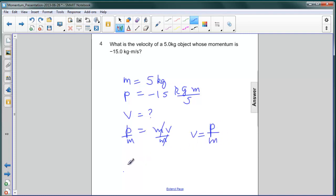And we can make substitutions for p and m and we get negative 15 kilogram meters per second divided by 5 kilograms.